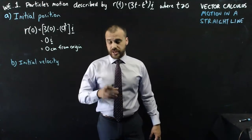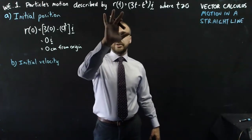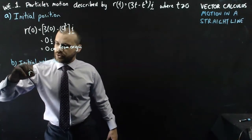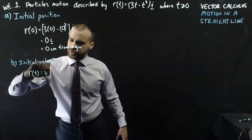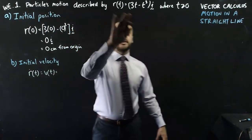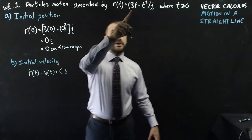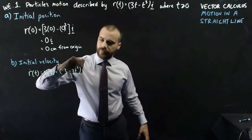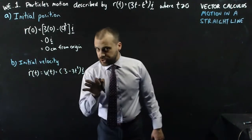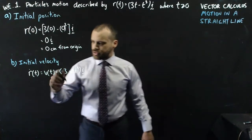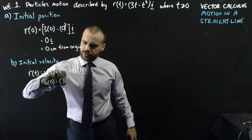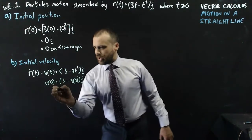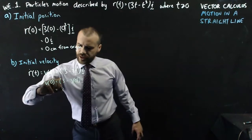How about the initial velocity? How fast is it traveling at time zero? To do that, we're going to have to find the derivative of r with respect to t. So r'(t), that's equal to our velocity function, which is going to be equal to (3 - 3t²)i. Now that's the velocity function. Now we're going to want to find the initial velocity at time zero. So v(0) equals 3 - 3(0)² i, and that's going to be 3i.